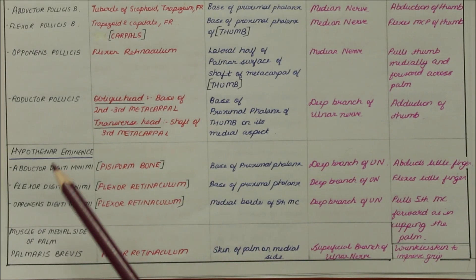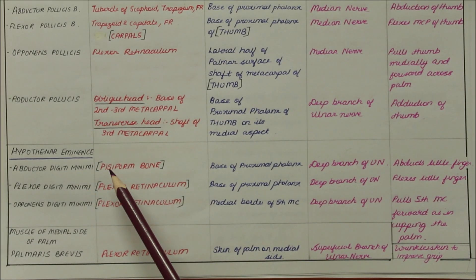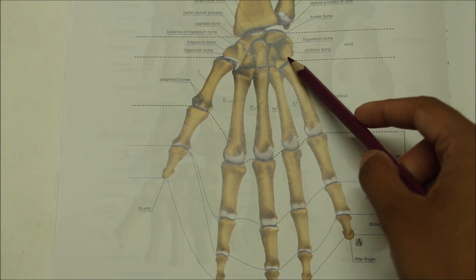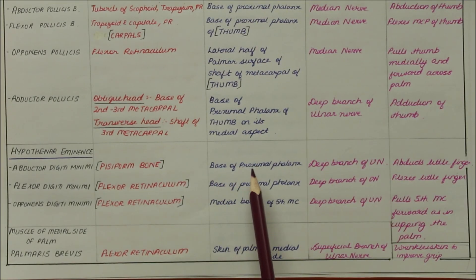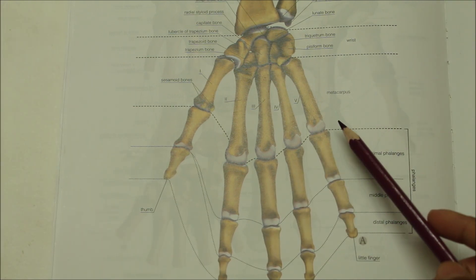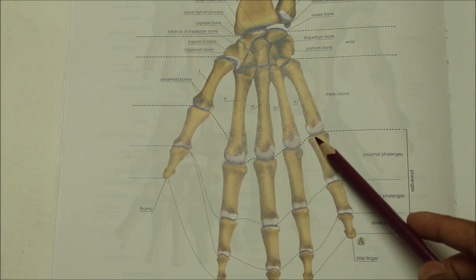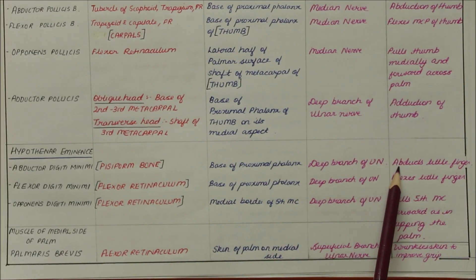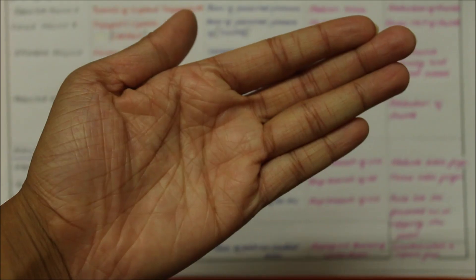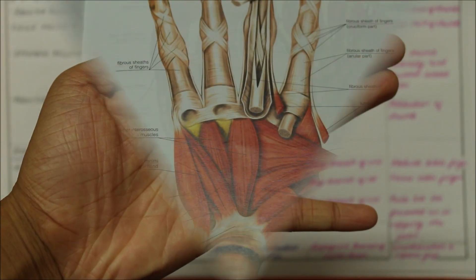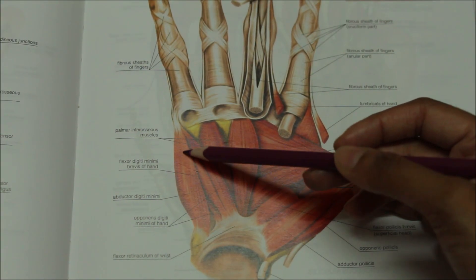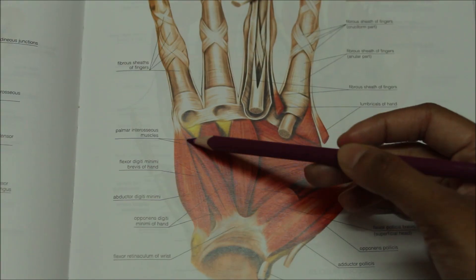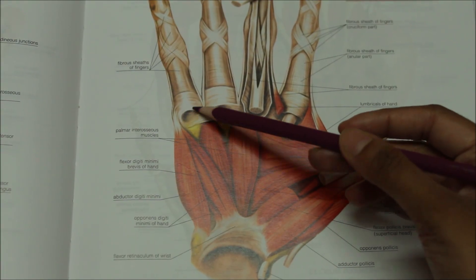Beginning with the abductor digiti minimi, it originates from the pisiform bone and inserts into the base of the proximal phalanx. It is supplied by the deep branch of the ulnar nerve, and its action is abduction of the little finger.